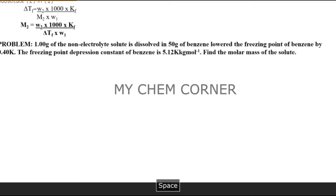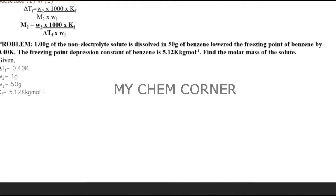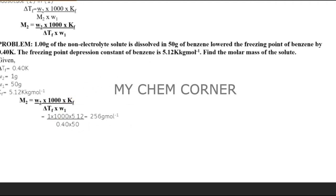Let's solve a problem. One gram of a non-electrolyte solute is dissolved in 50 grams of benzene and lowers the freezing point of benzene by 0.4 kelvin. The freezing point depression constant of benzene is 5.12 kelvin·kg per mole. Find the molar mass of the solute. The given values are: delta Tf = 0.40 kelvin, W2 = 1 gram (solute), W1 = 50 grams (solvent), Kf = 5.12 kelvin·kg per mole. Substituting these values directly into the formula gives the molar mass as 256 grams per mole.